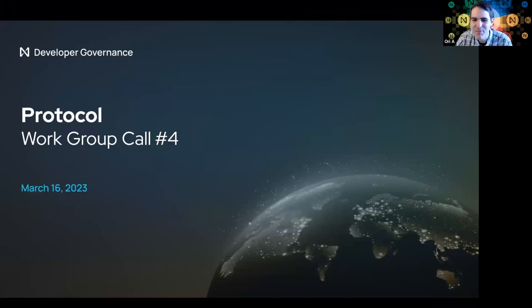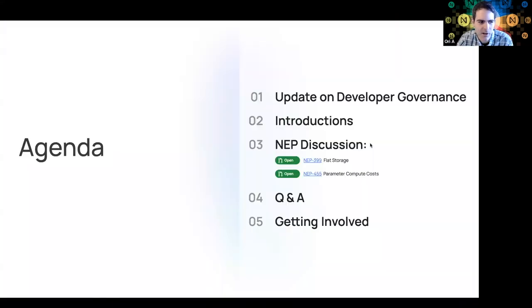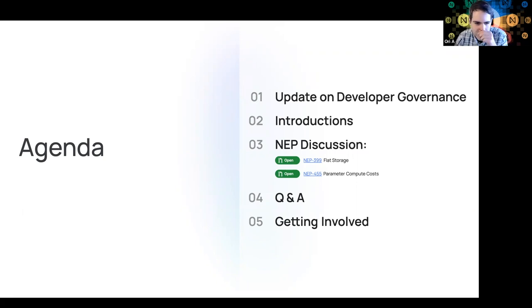Welcome to our fourth protocol working group call. We're going to be recording it and posting it later, so everything is going to be public. On the agenda today: we're going to do an update on developer governance, do some introductions, and then get into the main discussion. We have two NEPs — 399 Flat Storage and 455 Parameter Compute Costs. There are links to those NEPs on the invite.